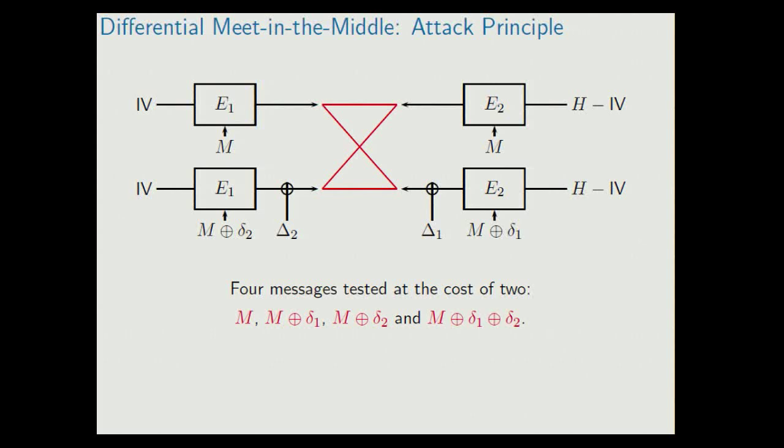And as a result, what we have done now is we have tested four messages at the cost of only two computations of E. One computation of E1 and one computation of E2 is equivalent to one computation of E. And this is the speed-up that we can obtain. In general, we will choose more differentials in both directions, 2^d differentials. They are a linear subspace of messages. And then this allows us to compute 2^(2d) messages at the cost of only 2^d. And this is the source of speed-up of the attack.